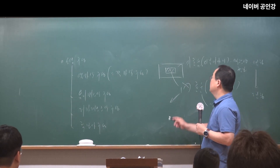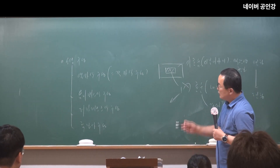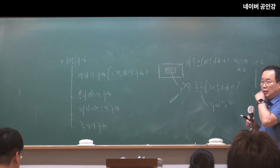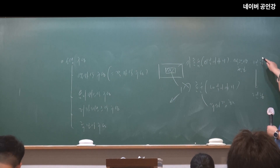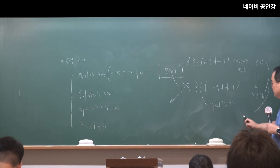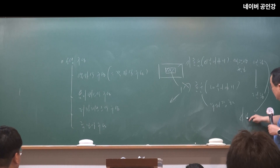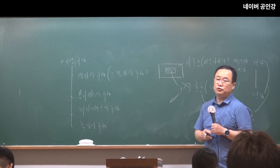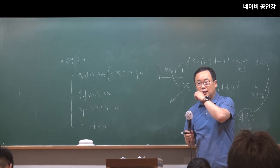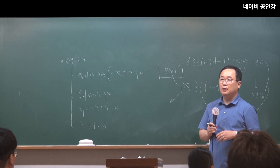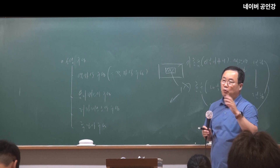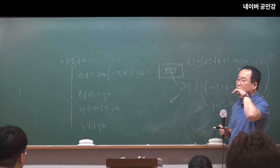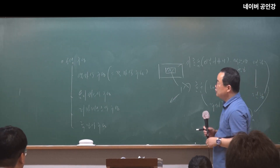액자식 구성, 다른 말로 격자식 구성입니다. 시점의 이동이 반드시 있으며, 이런 시점의 이동을 통해 결과적으로 사실감의 획득, 즉 리얼리티를 획득할 수 있습니다. 이것이 액자식 구성이 주는 효과입니다. 처음부터 꾸며내는 것이 아니라 앞에 포장하는 거죠—내가 어디 갔을 때 들은 내용이다, 본 내용이다라고 하는 것이 바로 액자식 구성의 형태입니다.